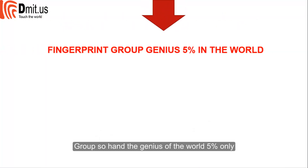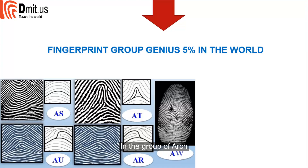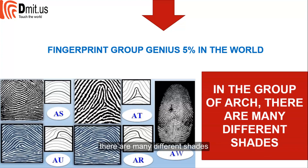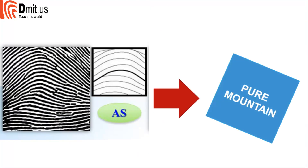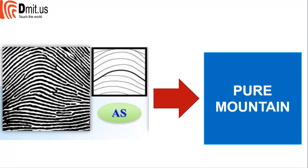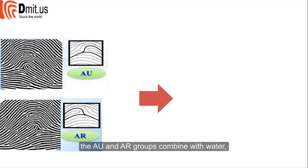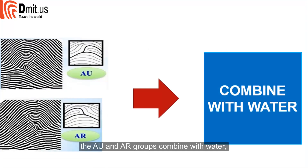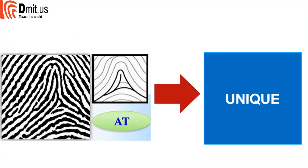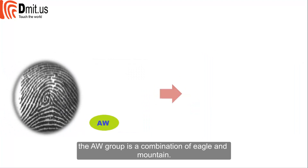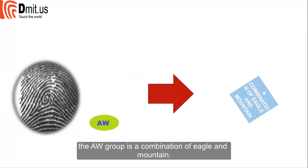The mountain group contains the genius of the world — approximately 5% only. Within the mountain group there are many different chains: the AS group is pure mountain; the AU and AR groups combine with water; the AT group is unique; and the AW group is a combination of eagle and mountain.